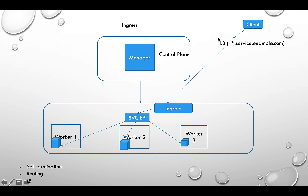Ingress also provides SSL termination. The load balancer can be set to bypass or pass-through, and TLS termination happens at the ingress level. In that case, communication between the ingress and the backend services inside the cluster is not TLS, but anything from outside is SSL-encrypted. There are many good use cases and features where this is useful.